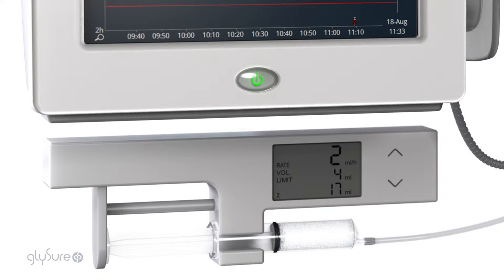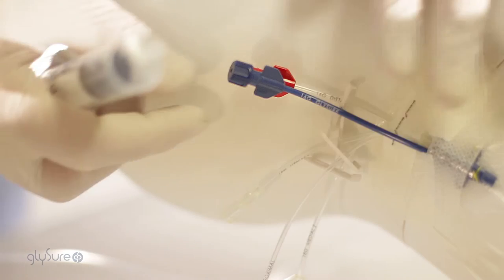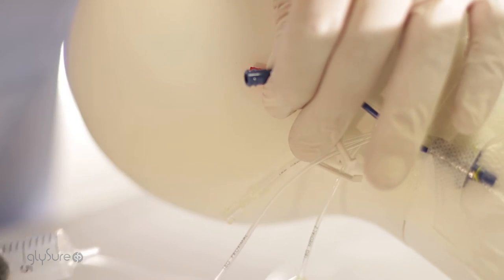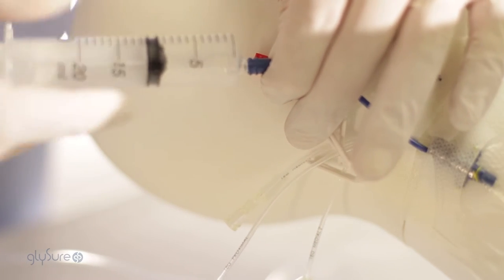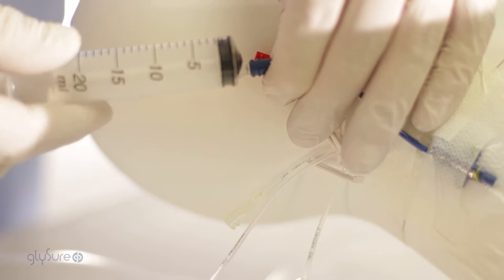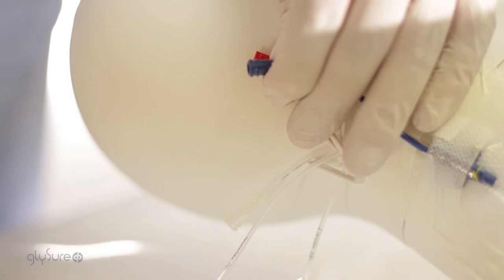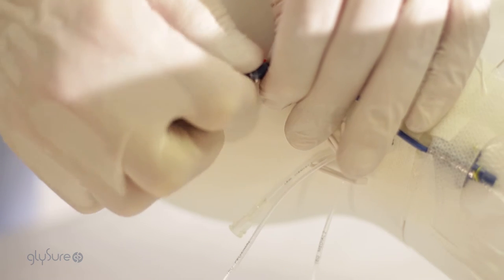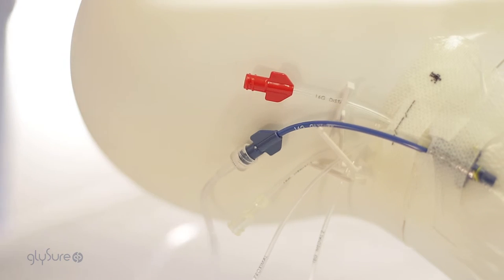Flush setup. Establish a continuous normal saline infusion delivering 2-4 millilitres an hour. Flush the blue sensor lumen with a 5-10 millilitre bolus of saline. Connect the 2-4 millilitres per hour saline infusion line to the blue sensor lumen to maintain line patency.